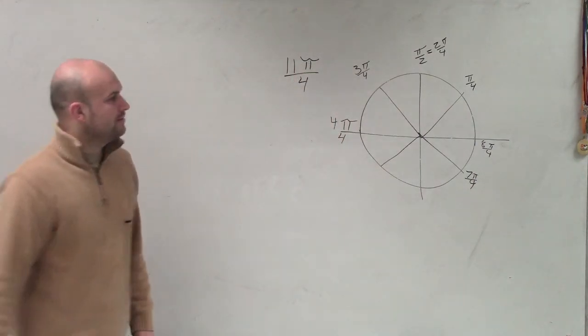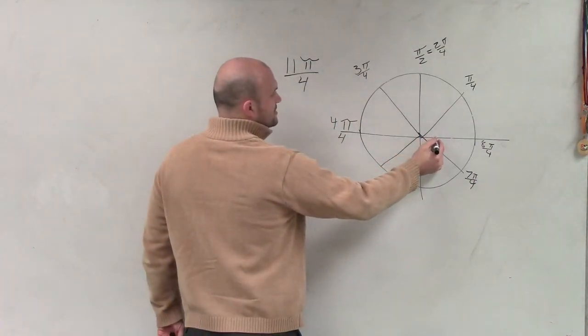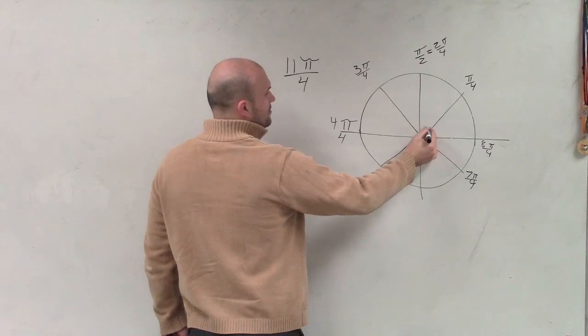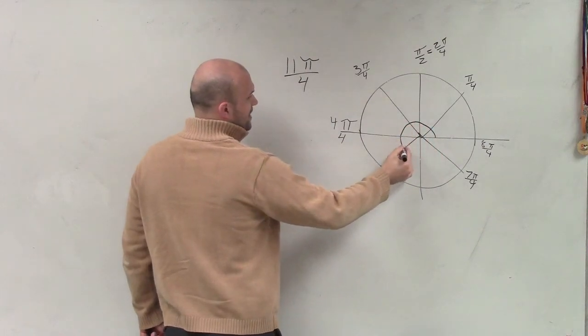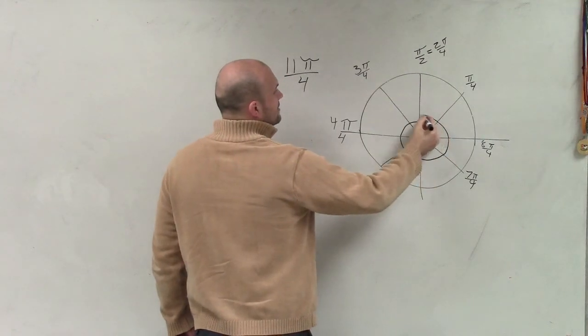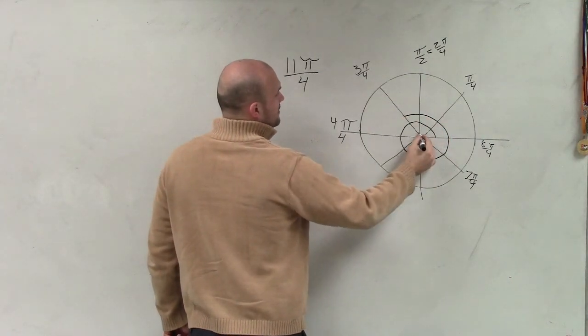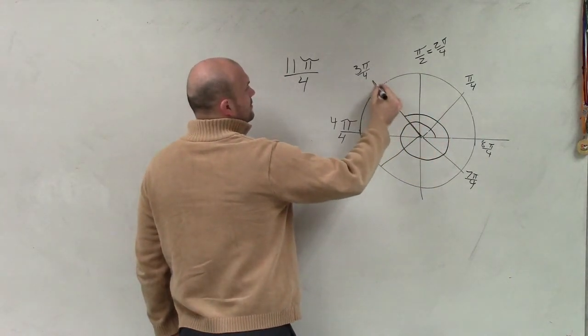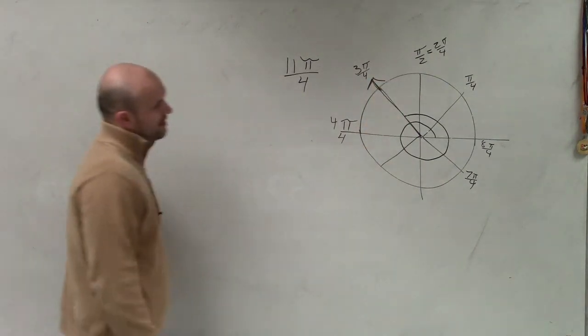So to start our angle, we're going to start here. We're just going to go all the way around and keep on counting: 1π, 2π, 3π, 4π, 5π, 6π, 7π, 8π, 9π, 10π, 11π. So our angle is right there.